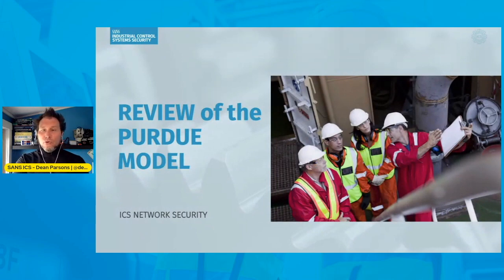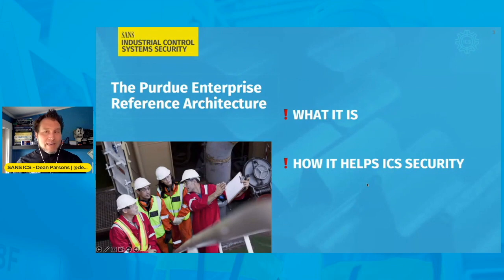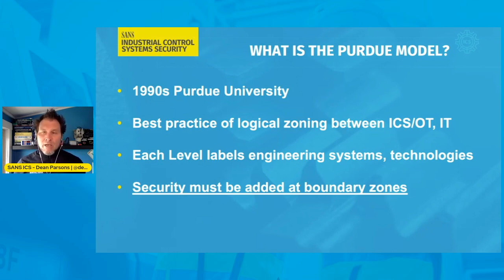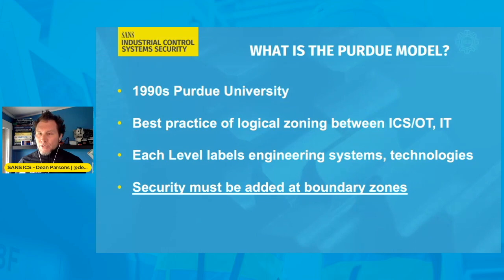This is a review of the Purdue model inside control system environments — the idea is to understand what it is and how it can help with ICS defense. Way back in the 90s at Purdue University is where the Purdue model actually came to be. The idea back then and even today is a best practice for logically representing and zoning devices and technologies in ICS environments from the OT and IT environments. Each level labels engineering devices, systems, and technologies, but security must be added at boundary zones for these devices to perform active defense.